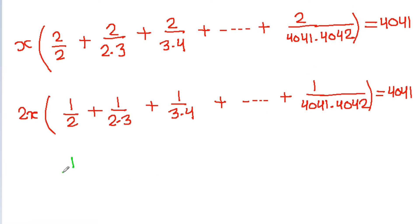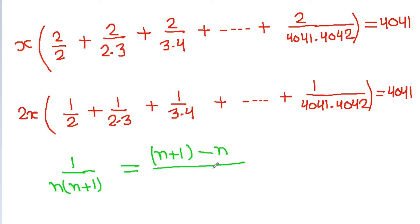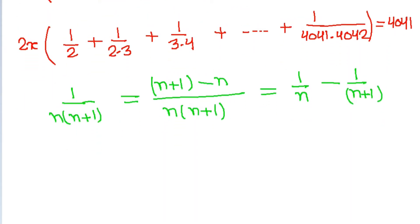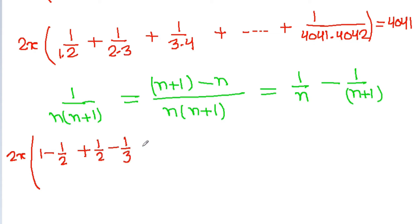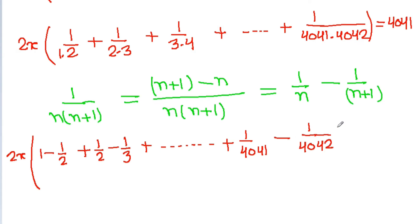This is equal to 4041. Now, 1 by (1 into 2) can be written as 1 minus 1 by 2; similarly 1 by (2 into 3) can be written as 1 by 2 minus 1 by 3; and similarly 1 by (4041 into 4042) can be written as 1 by 4041 minus 1 by 4042. That is equal to 4041.